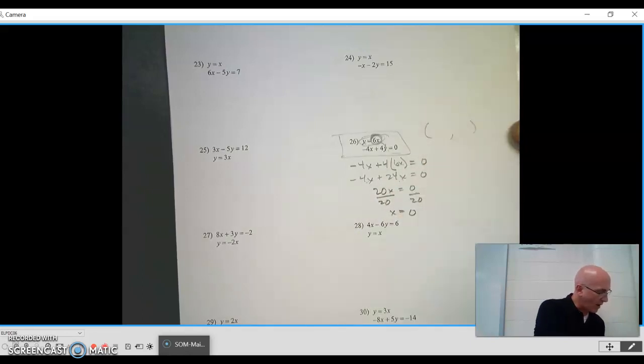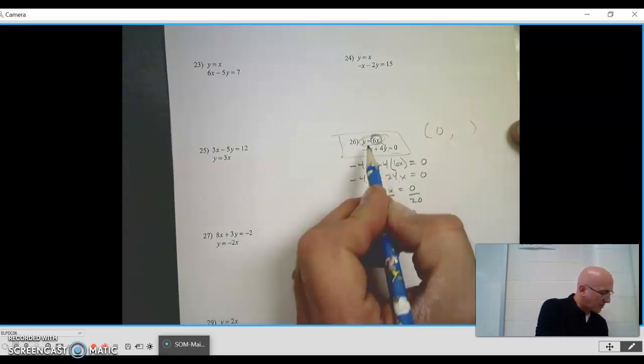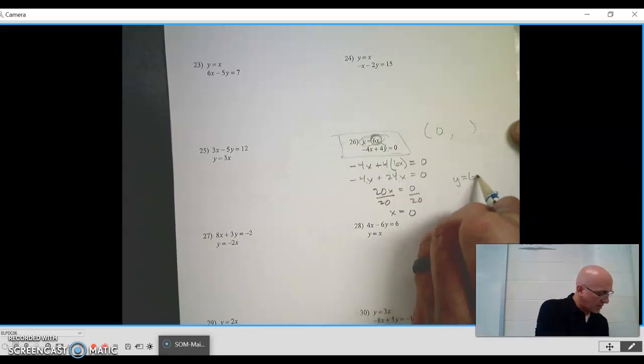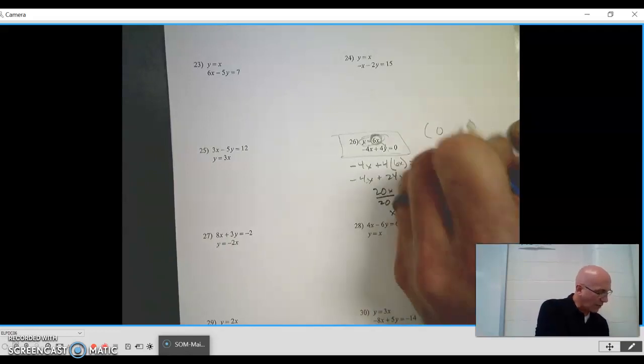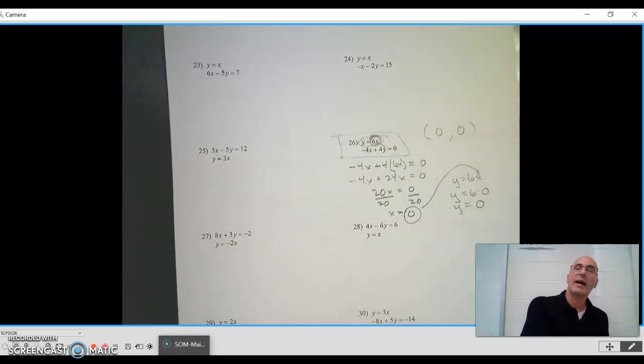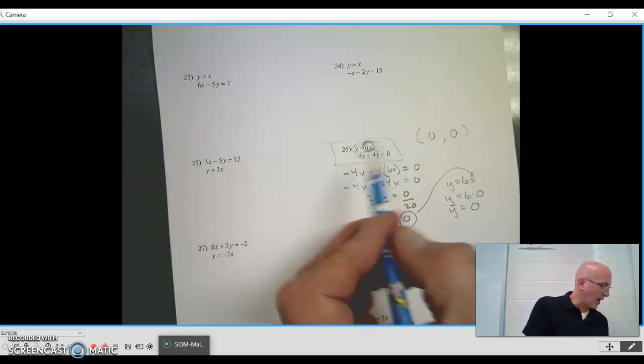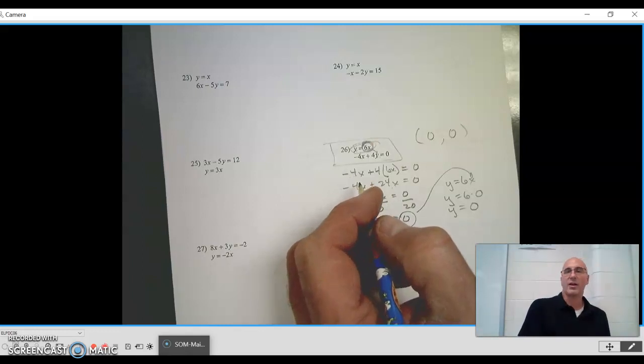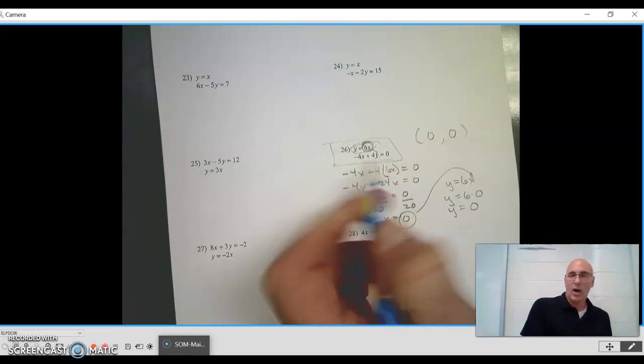So when I have my ordered pair, my x is going to be 0. Now I'm going to substitute that into either one of these original equations. Let's pick the easiest one: y equals 6x. If I put 0 in for x, y equals 6 times 0, or in other words, y equals 0. So the solution to that system of equations is 0, 0. That means the only time that these two graphs will be true together is if x equals 0 and y equals 0.